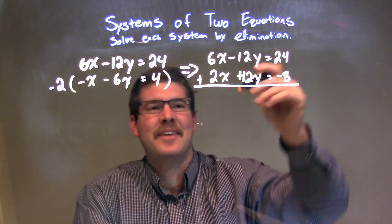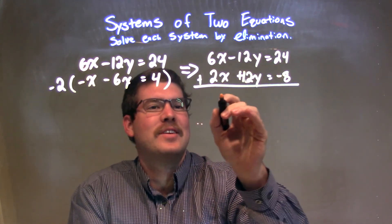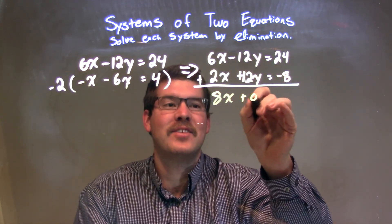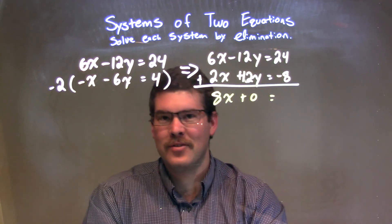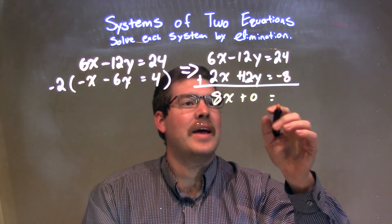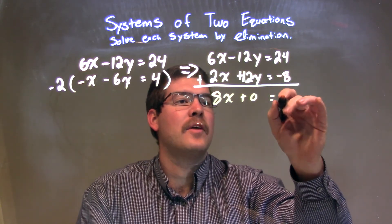To add these two straight down, 6x plus 2x is 8x. Negative 12y plus positive 12y is 0, which is sure. If it doesn't, you messed up, and I almost did. 24 and negative 8 come out to be positive 16.